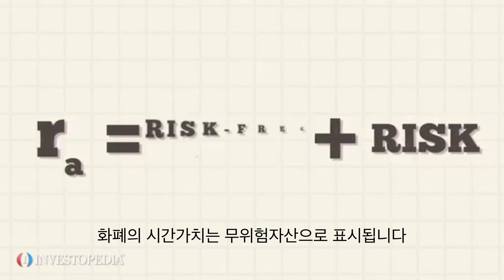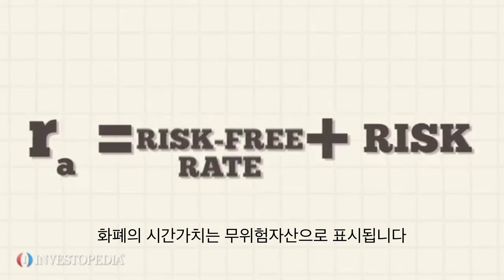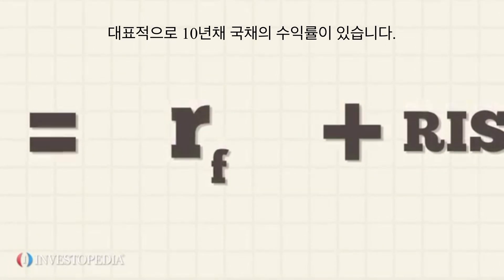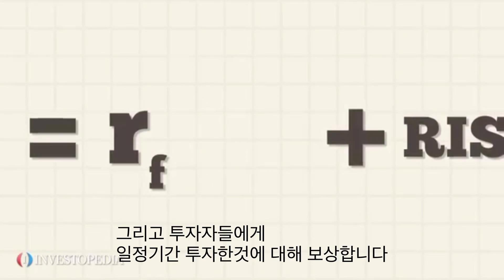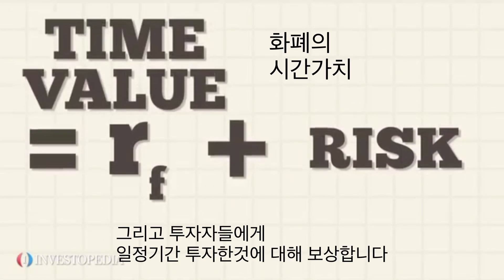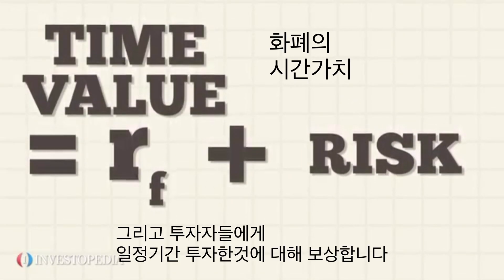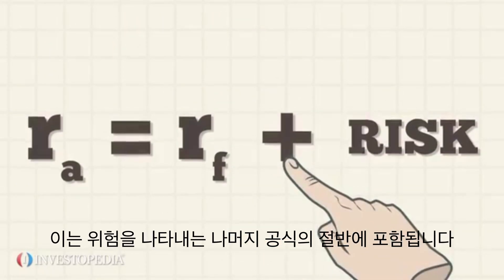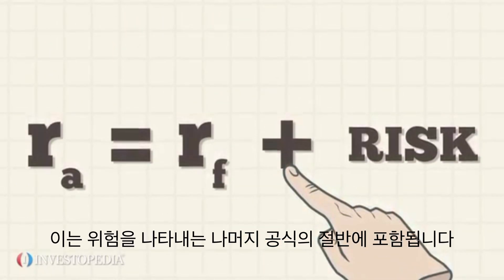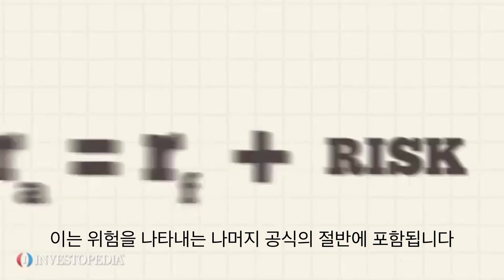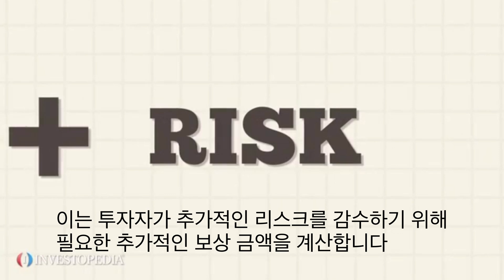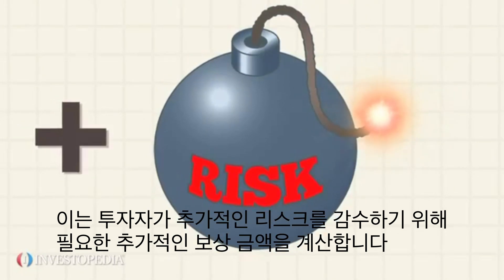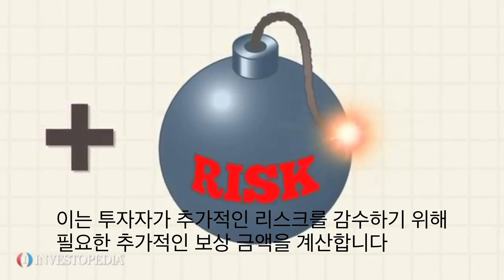The time value of money is represented by the risk-free rate, usually a 10-year government bond yield, and compensates the investors for placing money in an investment over a period of time. That is added to the other half of the formula, which represents risk, and calculates the amount of compensation the investor needs for taking on additional risk.